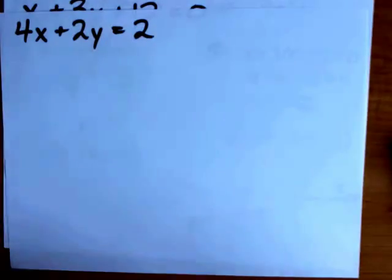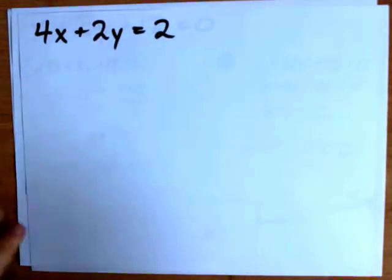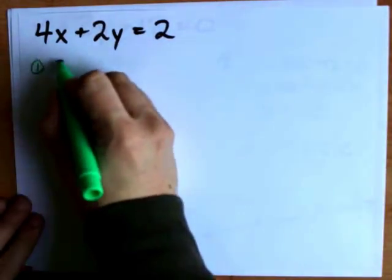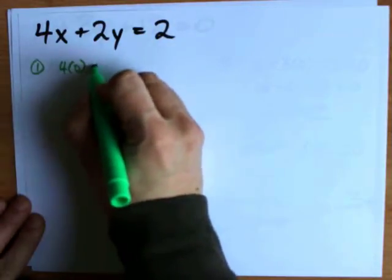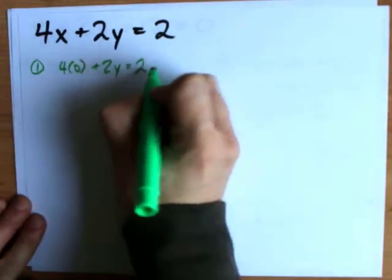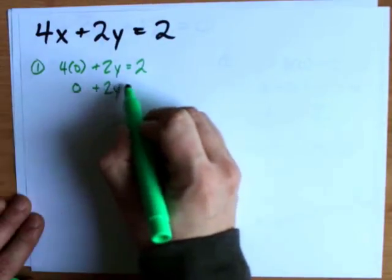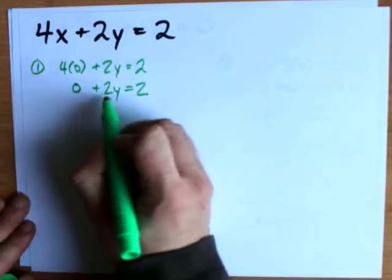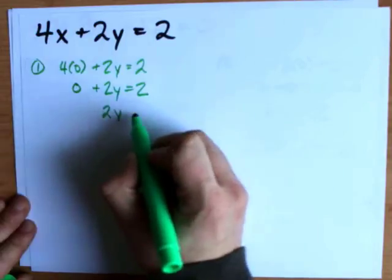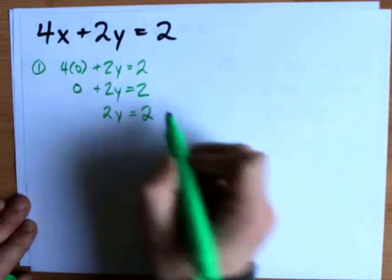Let's do another one together. Why not? Step 1: Plug in x equals 0. 4 times 0 plus 2y equals 2. 4 times 0 is 0 plus 2y equals 2. 0 plus anything is just that same thing left over, so that really didn't mean anything.